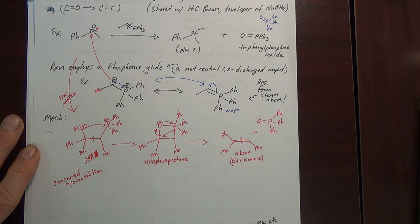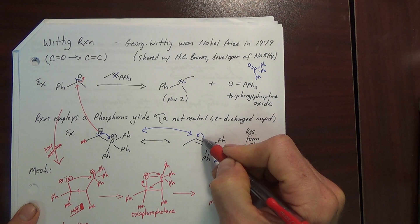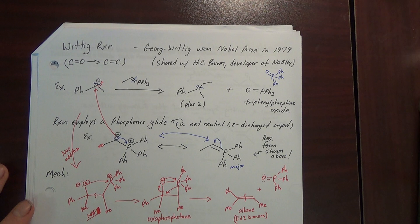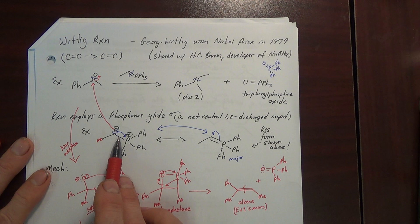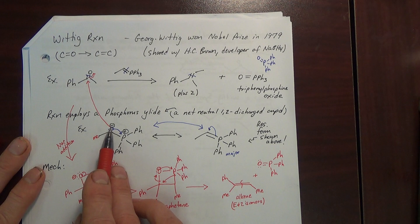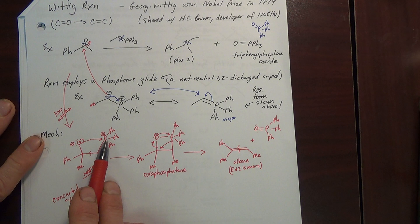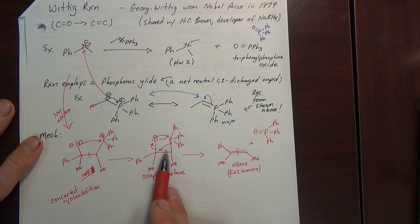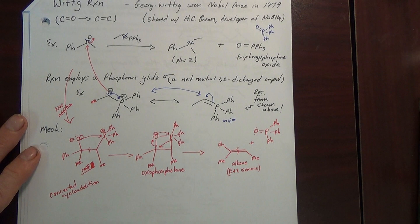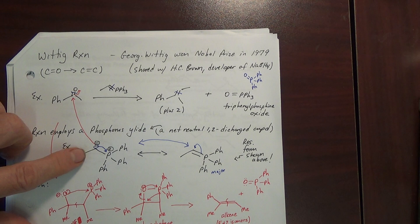The charged resonance structure is good for seeing the mechanism: the carbon becomes double-bonded to the carbonyl carbon rather than phosphorus. But the double-bonded resonance structure is best for visualizing the overall reaction. The oxygen is right next to that positive phosphorus, and driving forces lead this to break apart and give your alkene. The ylid is often called your Wittig reagent.